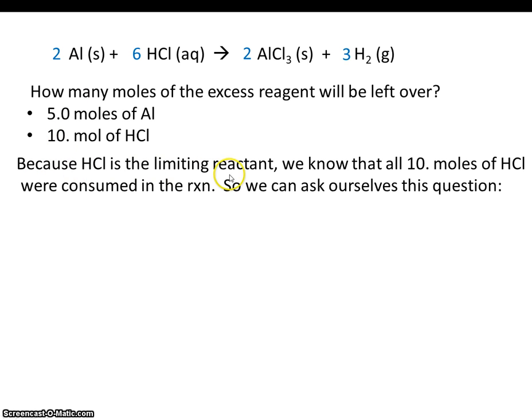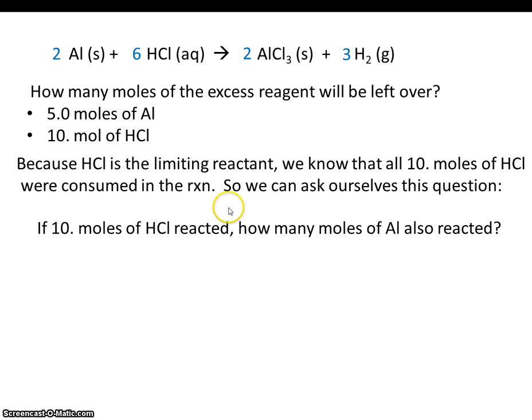Because HCl is the limiting reactant, we know that all 10 moles of HCl were consumed in the reaction. So we can ask ourselves the question, if 10 moles of HCl react, and we know that 10 moles did because it was the limiting reactant, how many moles of aluminum also react?